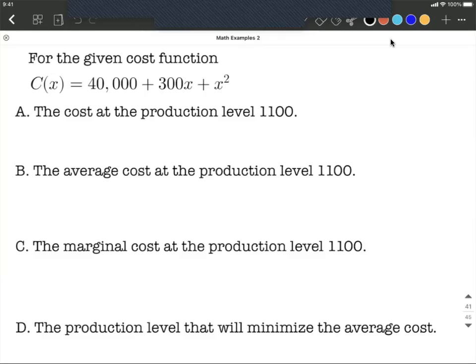Okay, we're getting a cost function and we're going to answer some questions about average cost, marginal cost, and minimizing average cost. So the first thing on here, on part A, what we're given is we want to know the cost at a production level of 1100.